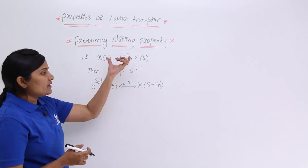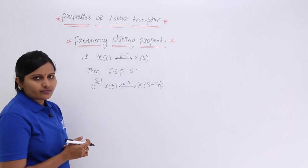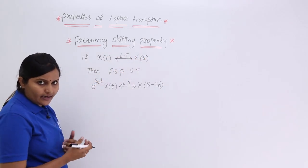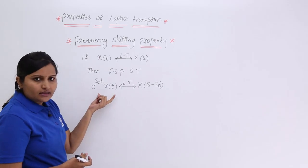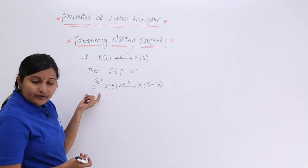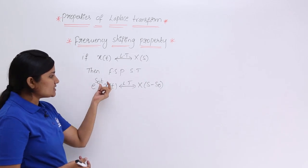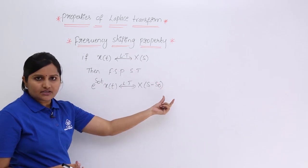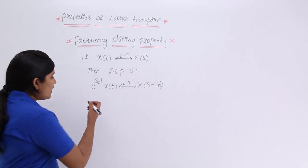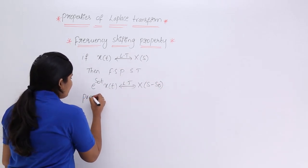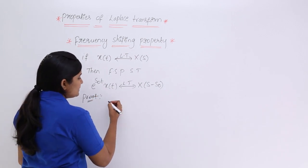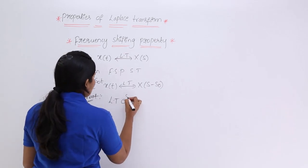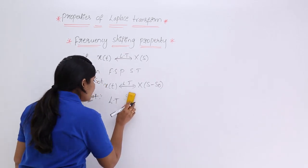So if x(t) has Laplace transform X(s), then the same signal x(t) multiplied by e^(s₀t) has its frequency shifted to X(s - s₀) in the spectrum. Now I want to prove this. For the proof, I will consider the Laplace transform of e^(s₀t)·x(t).